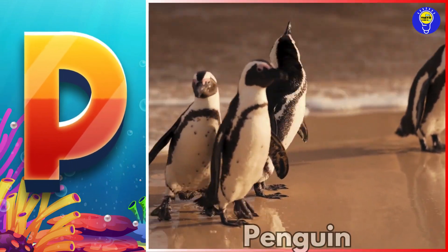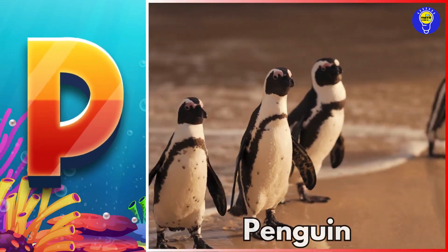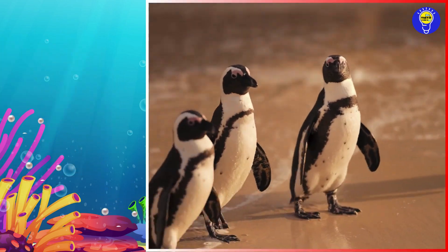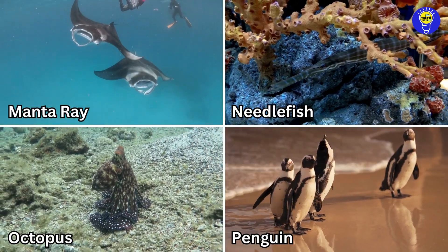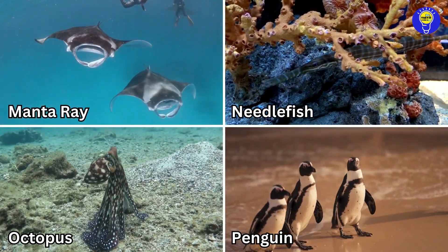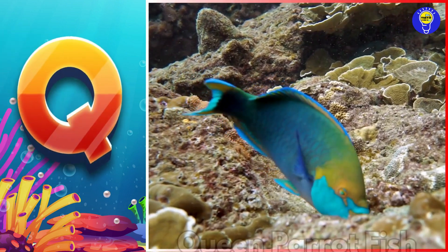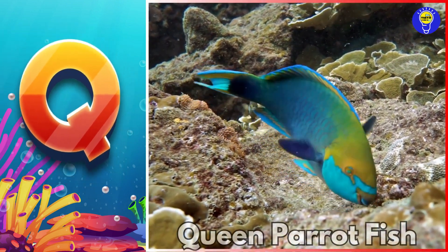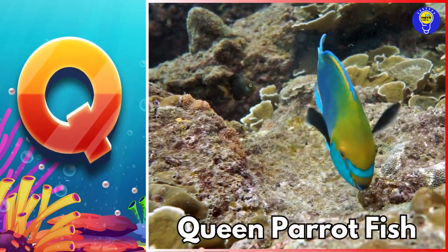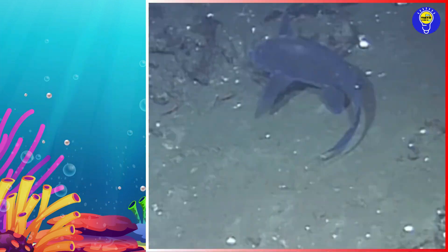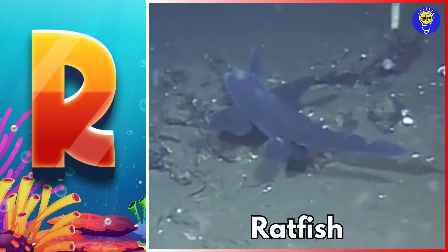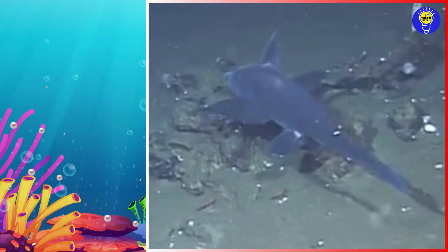P is for penguin. Penguin. Q is for queen parrotfish. Queen parrotfish. R is for ratfish. Ratfish.